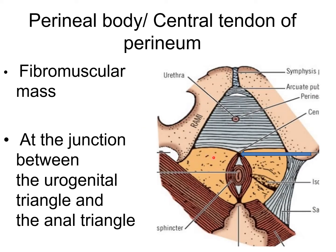The perineal body, or central tendon of perineum, is the central point of the perineum, present at the junction between the urogenital triangle and anal triangle. It is a fibromuscular mass of irregular shape and size, with variable consistency. It contains collagen fibers, elastic fibers, and both skeletal and smooth muscles.